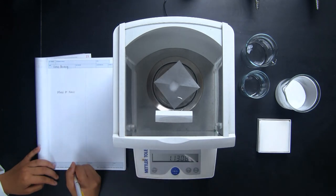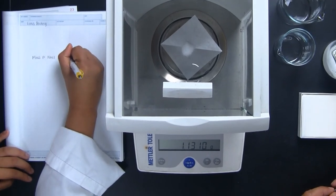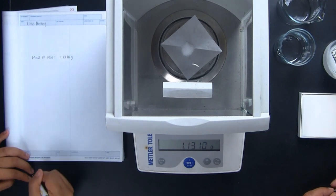Using the tare function, the subtraction is done for you, and the reading on the balance is the mass of the reagent that was transferred to the paper. You're ready to go.